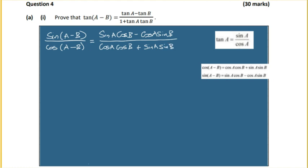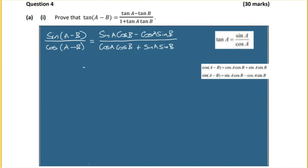It looks more complicated now, but there's one key step. Looking at the target identity, we can see a 1 in the denominator. To get that 1, we divide everything by cos(a)cos(b). Let's carry that out.